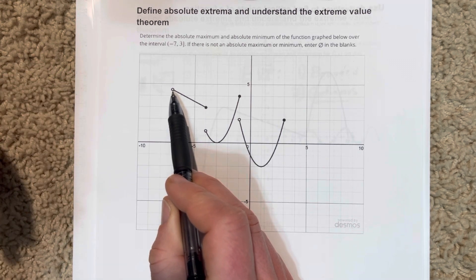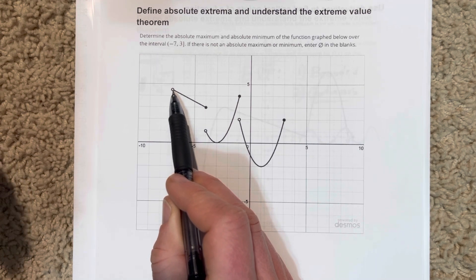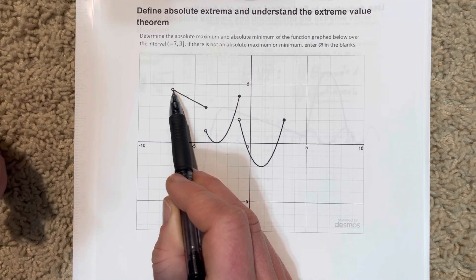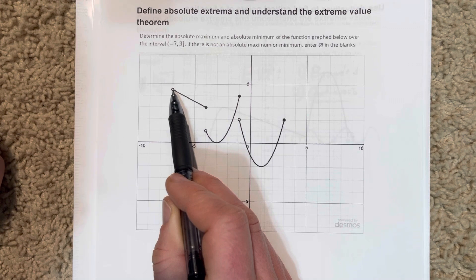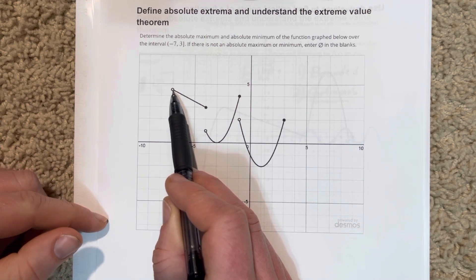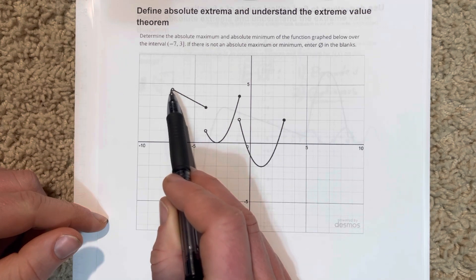Well, the way to understand that there's no absolute maximum that exists is to just keep adding nines to 4.49. If I had 4.49, 4.499, 4.4999, no matter what largest number you give me, I can make a larger number that's closer to 4.5.